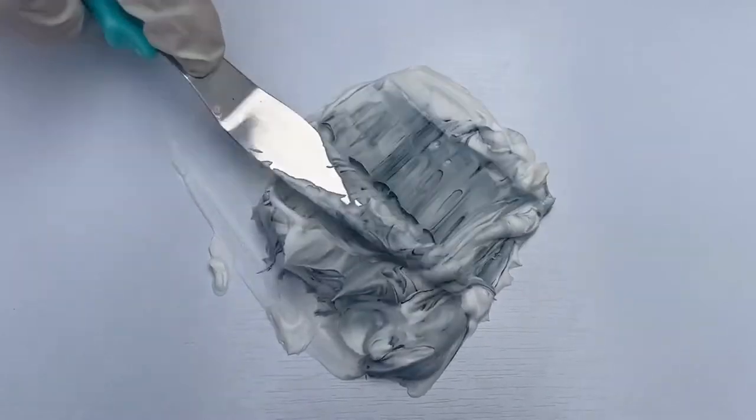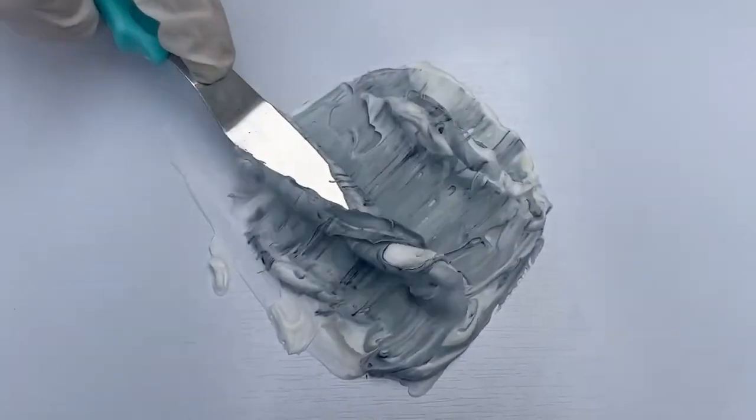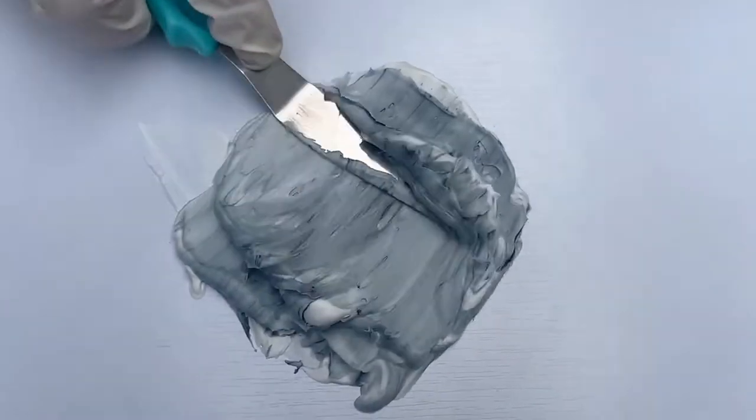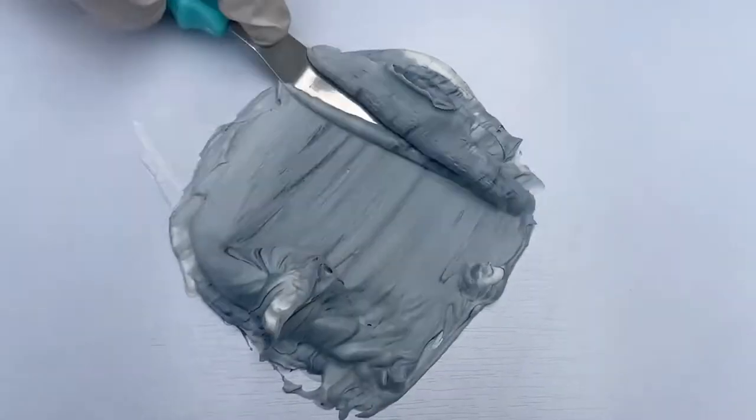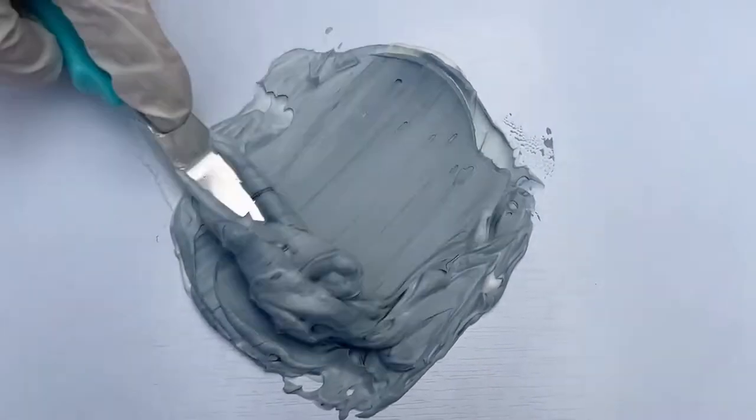Now the basic way of getting grey color is by mixing black with white. But you usually don't get the perfect shade of grey. It has more of an undertone of blue color.